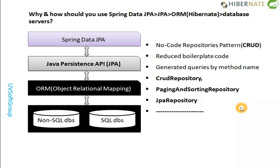There are available CrudRepository, PagingAndSortingRepository, and JpaRepository. For MongoDB, there are specific repositories like MongoRepository and MongoPagingAndSortingRepository. Depending on which backend server you use — if you're in the SQL world like PostgreSQL, MySQL, Oracle, or DB2 — the standard repositories apply.